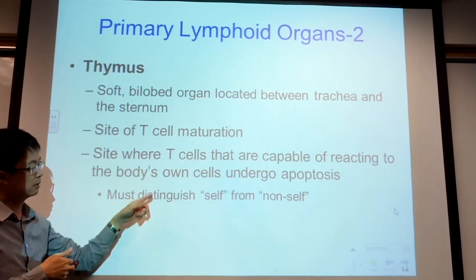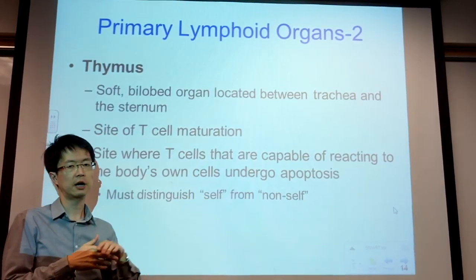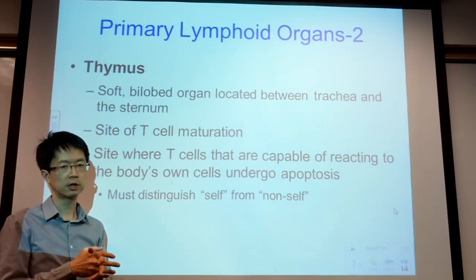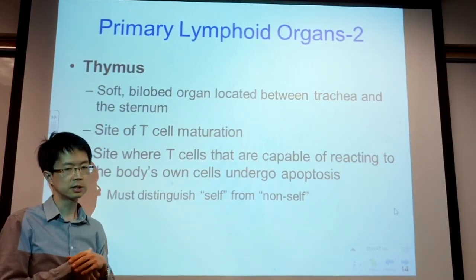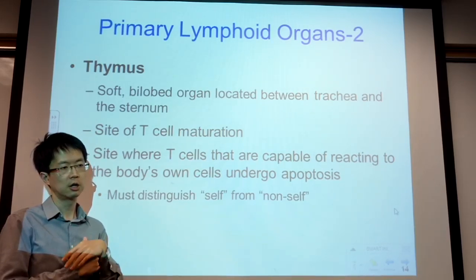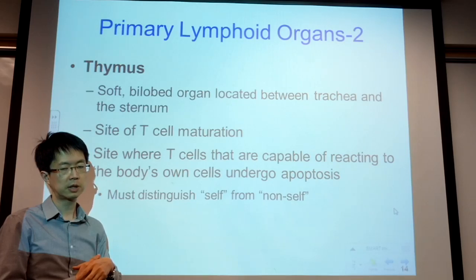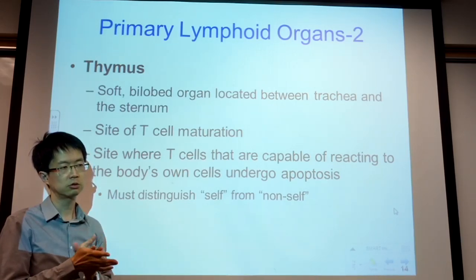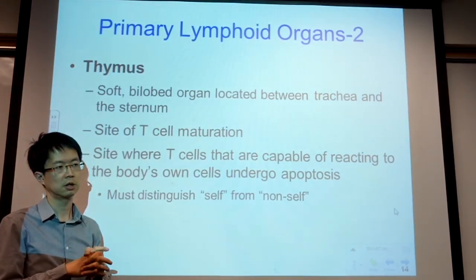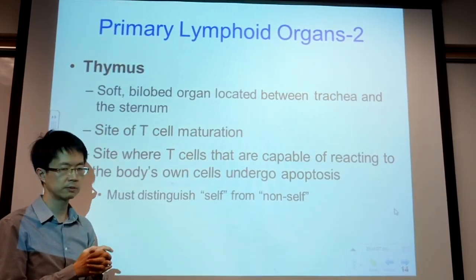One function of T cells is to distinguish self from non-self — to identify your own body cells versus foreign invaders. Apoptosis: at our level we can assume apoptosis is the same as programmed cell death, though at the graduate or research level they are considered two different processes.